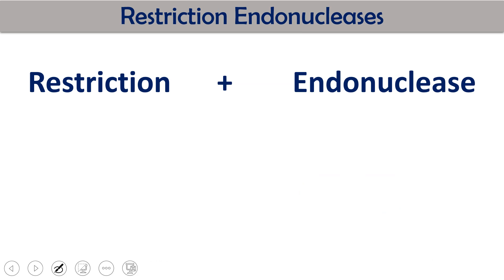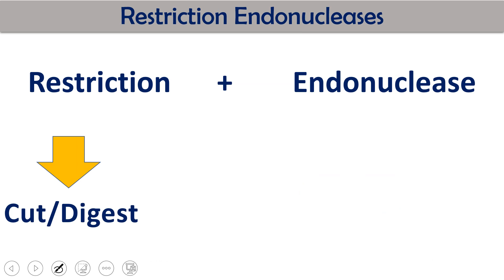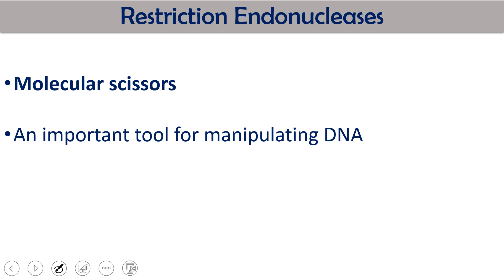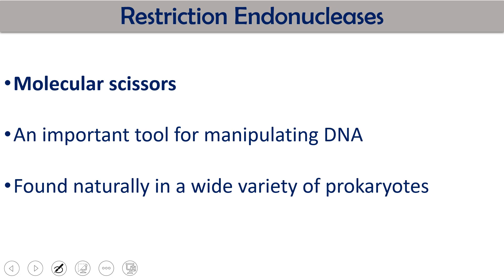Restriction endonuclease is made of two different terms: restriction means cut and digest, and endonuclease means inside. So those nuclease enzymes which cut or digest the DNA from inside are called restriction endonucleases. This restriction endonuclease works as a molecular scissor — like a scissor used to cut different kinds of cloth or paper, this is used to cut DNA. It is found naturally in a wide variety of prokaryotes as a defense system.